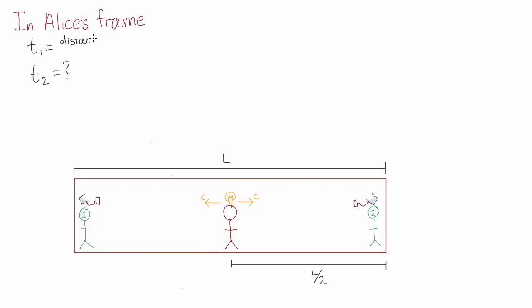Time is just distance divided by speed. The distance from Alice to friend 1 is l over 2, and the speed of light is c.